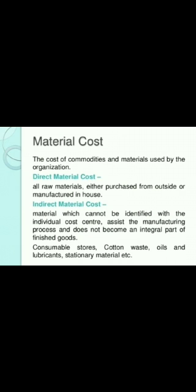The cost of commodities and materials used by the organization is the material cost. Direct material cost refers to all raw materials either purchased from outside or manufactured in-house. For example, milk is the direct material of all dairy products like ghee, butter, etc. Wood and graphite are the direct materials of a pencil. Indirect material is the material required to produce a product but not directly identifiable and does not form part of the finished product. For example, the use of nails to make a table or boxes.